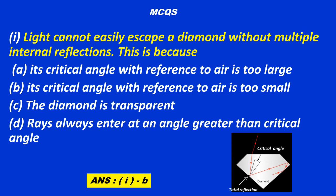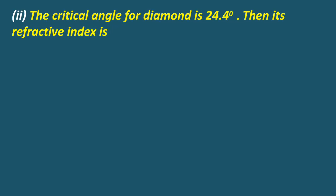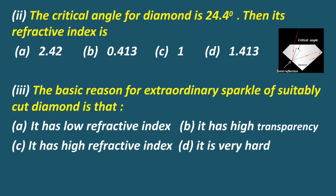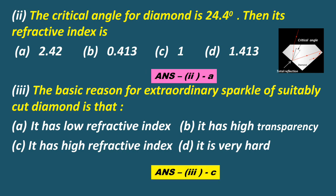Question 2: The critical angle for diamond is 24.4 degrees, then its refractive index is — Option A: 2.42, Option B: 0.413, Option C: 1, Option D: 1.413. The correct answer is Option A — 2.42. Question 3: The specific reason for extraordinary sparkle of suitably cut diamond is — Option A: it has low refractive index, Option B: it has high transparency, Option C: it has high refractive index, Option D: it is very hard. The correct answer is C — it has high refractive index.